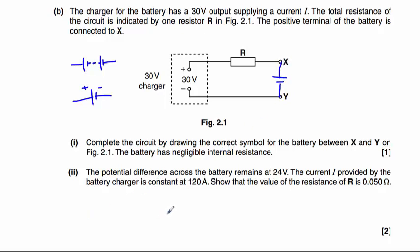Part 2, the potential difference across the battery remains at 24 volts. The current I provided by the battery charger is constant at 120 amps. So we need to show that the value of the resistance of R is 0.05 ohms. So if we're having 30 volts supplied here, but only 24 volts across these terminals here, that must mean that 6 volts are being dropped across the resistor.